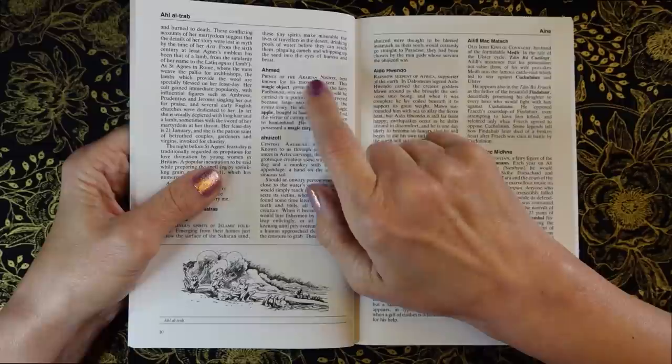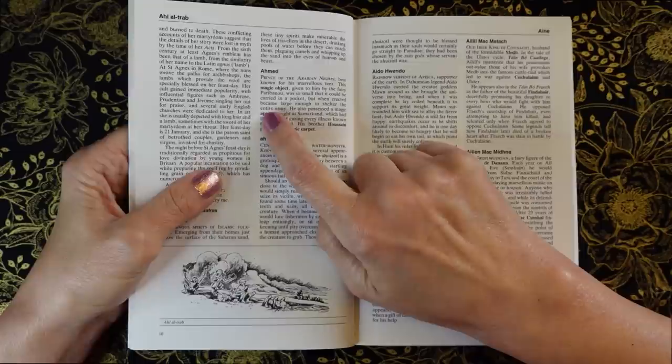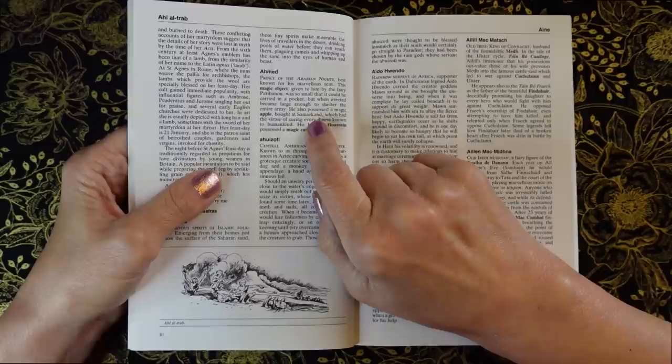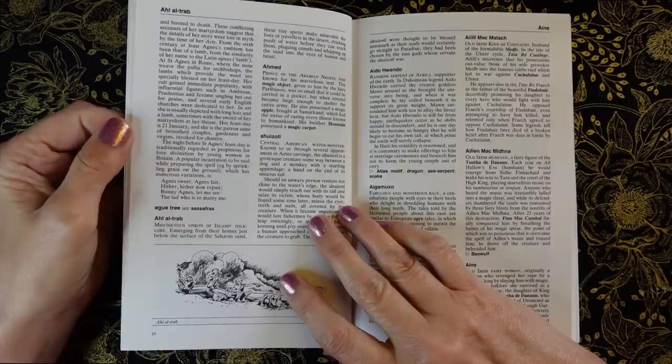Ahmed, Prince of the Arabian Nights best known for his marvelous tent. This magic object given to him by the fairy Pari Banu was so small that it could be carried in a pocket, but when erected it became large enough to shelter the entire army. He also possessed a magic apple bought at Samarkand which had the virtue of curing every illness known in humankind. His brother Hussain possessed a magic carpet.